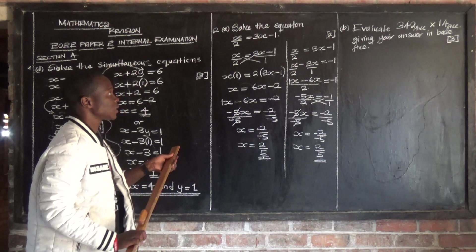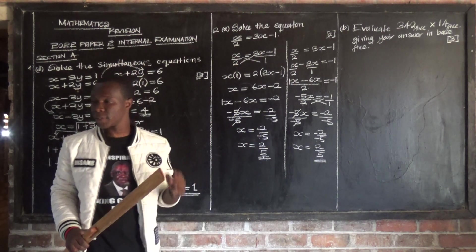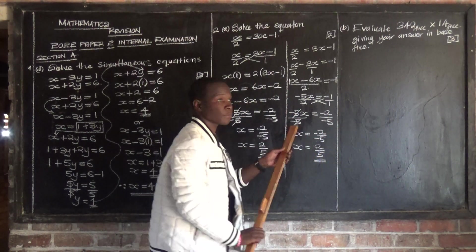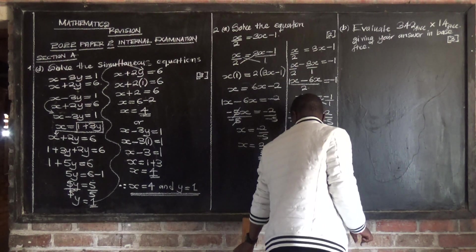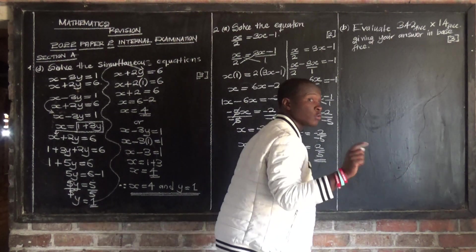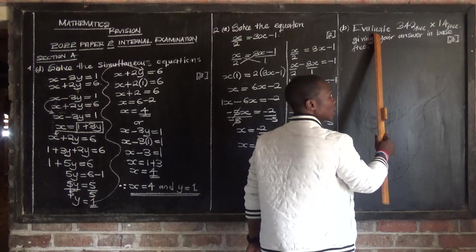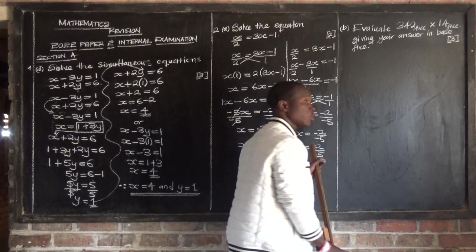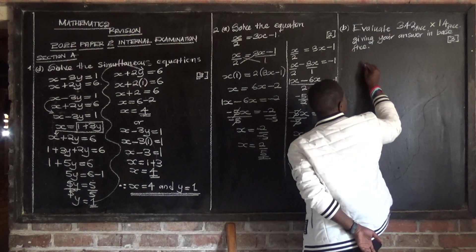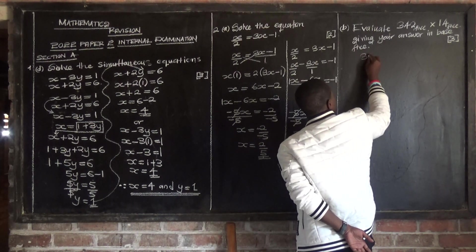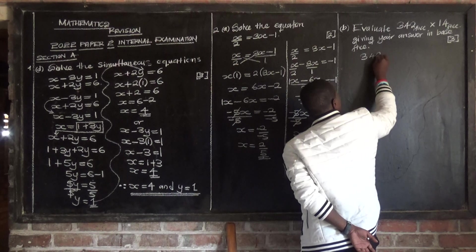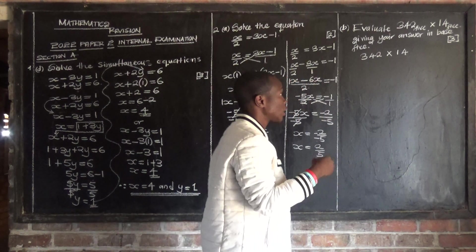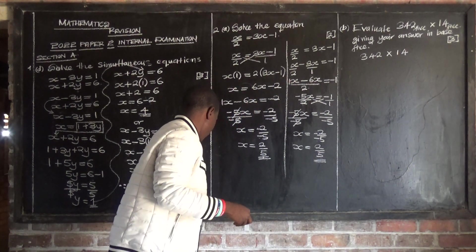Then the last question is on number bases — we are multiplying in number bases. This question carries 3 marks. Let's look at question B of question 2. It says evaluate — to evaluate means to find the exact value. We are evaluating 342 multiplied by 14, all in base 5, and we need to give our answer in base 5.